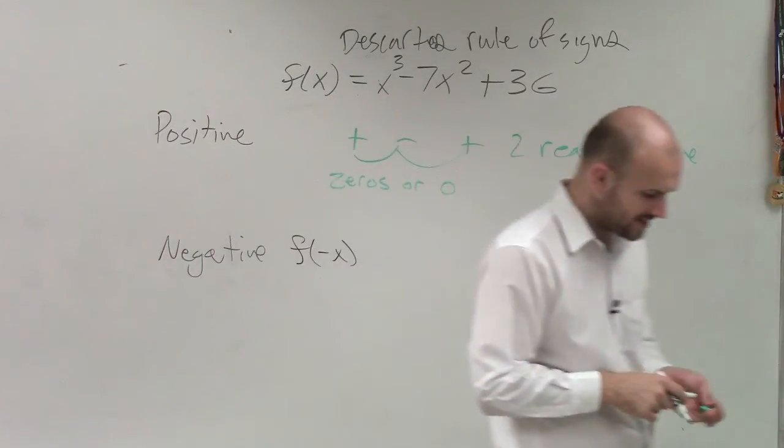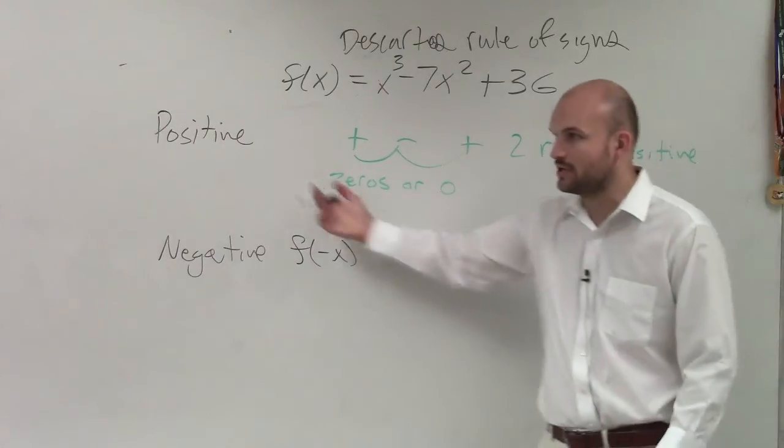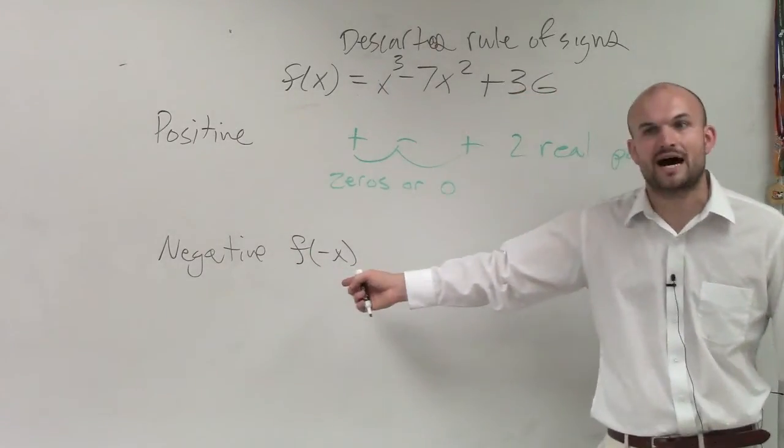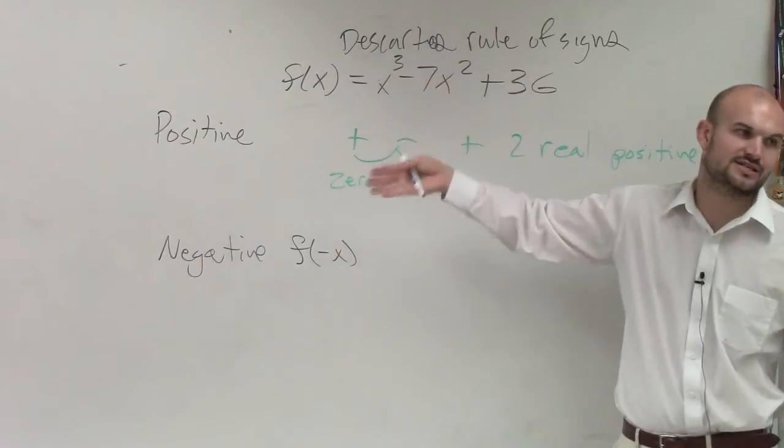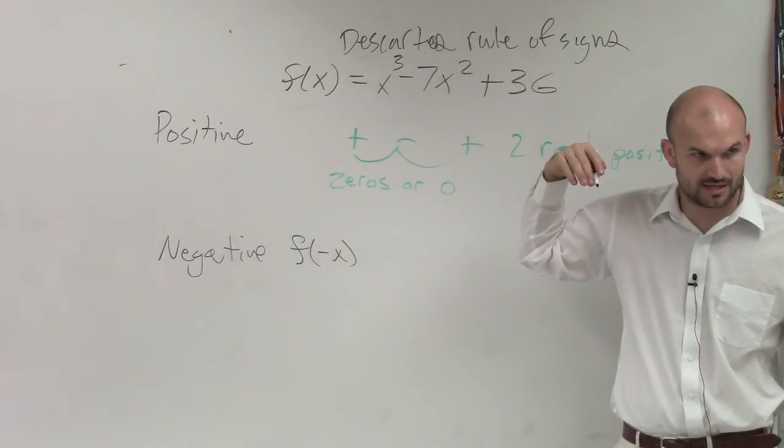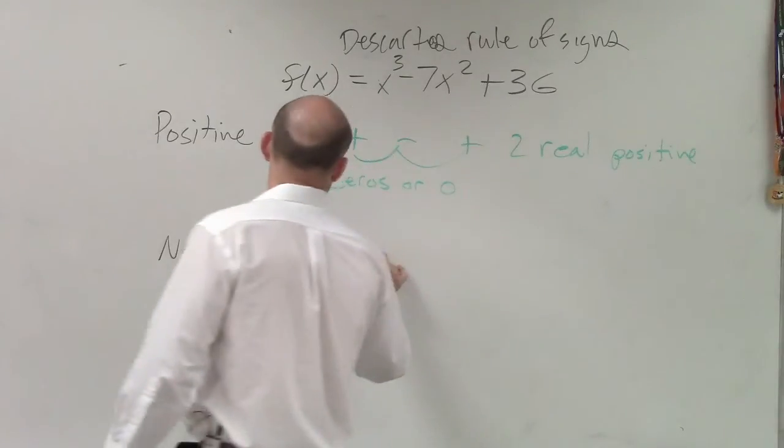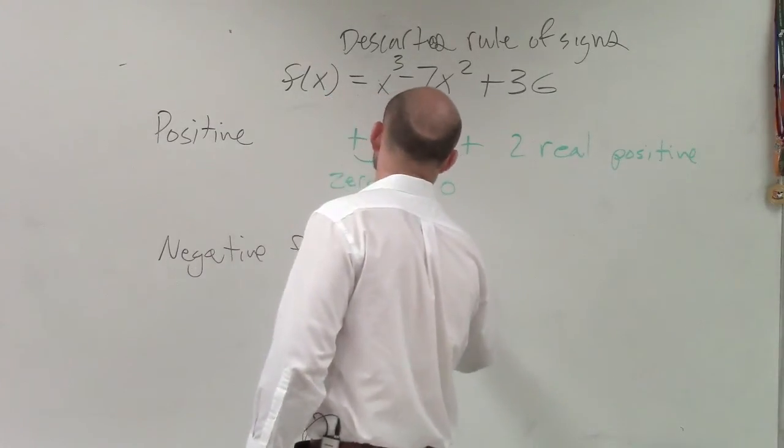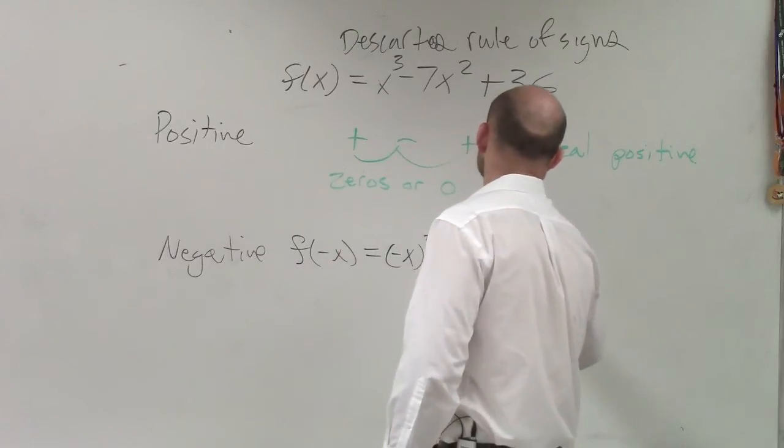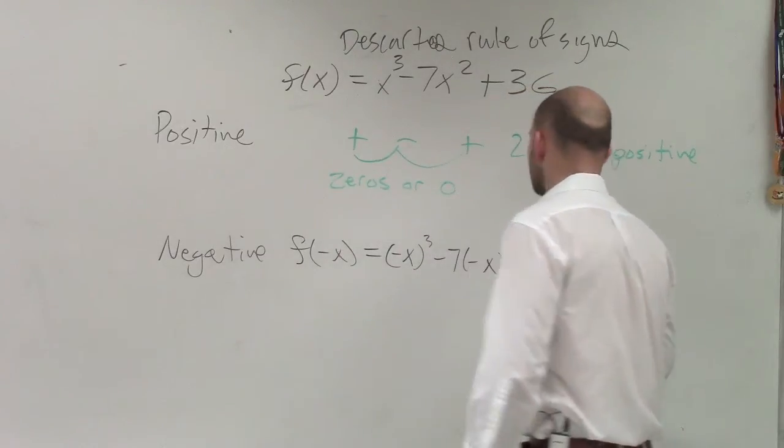So with your guys' history of functions, you remember, once you plug in, you change the input value, you've got to change the input value of the function, right? Yeah. So that becomes negative x cubed minus 7 negative x squared plus 36.